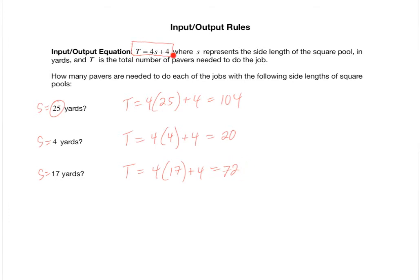This input-output rule is extremely valuable to the company pool pavers, because all they need to know is that their customer has a square pool, and given a specific side length, they can compute the total number of pavers they need to bring to the job by plugging in the side length of the pool into this input-output rule right here.